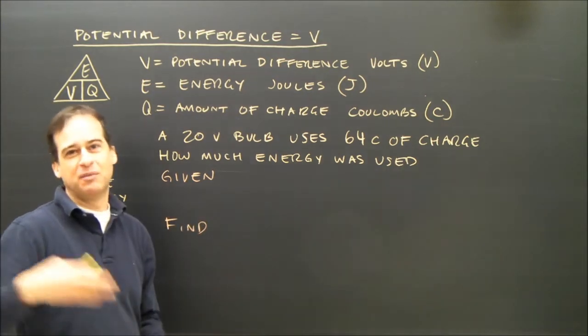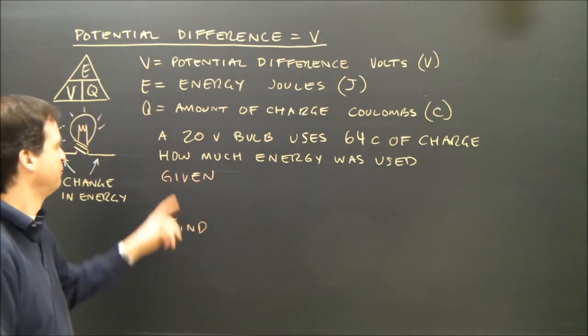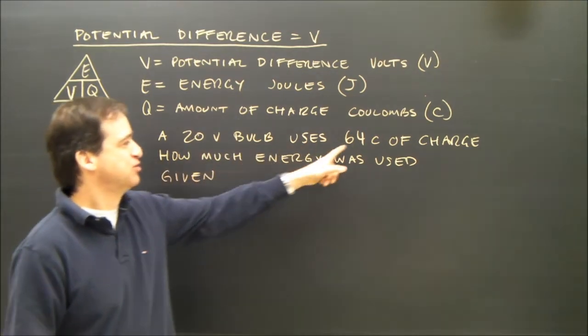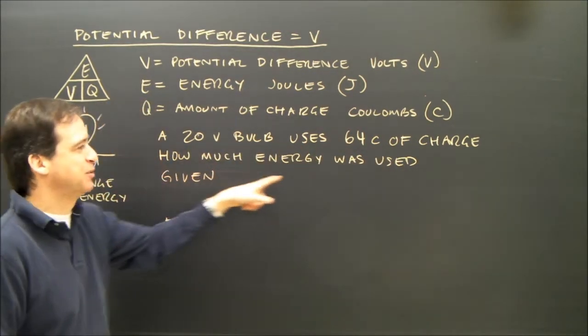If you understand how to do this, then maybe go on to the next video, but I'm going to do a quick problem here. A 20 volt bulb uses 64 coulombs of charge. How much energy was used?